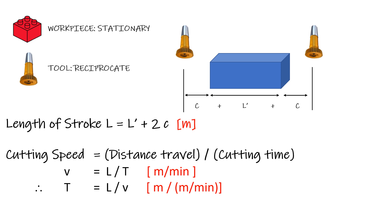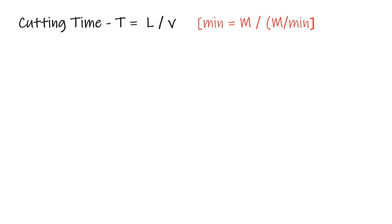If we simplify, meters divided by meters per minute gives the answer in terms of minutes, so T is in minutes. Our cutting time equation is T equals L upon v, where L is stroke length in meters, v is cutting speed in meters per minute, and T is in minutes.